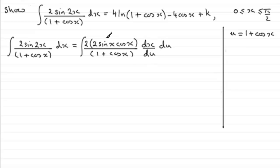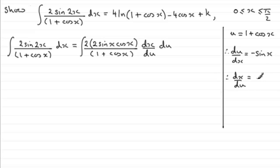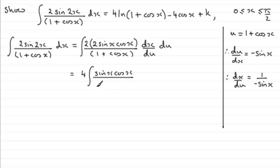So we need to change all of this into some function of u. We've got to find dx/du first — we can do that by finding du/dx and then reciprocating it. So du/dx: the differential of 1 is 0, and the differential of cosx is −sinx. Therefore dx/du must be the reciprocal, which is −1/sinx. We also have 2 times 2, which is 4, which we can pull out the front of the integral, leaving sinx·cosx all over (1 + cosx), multiplied by −1/sinx, integrated with respect to u.